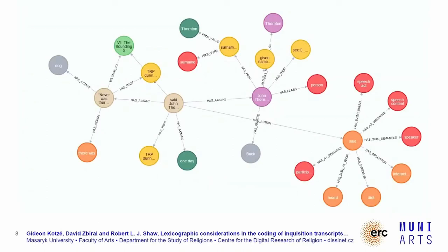This is a graph-based approach generated by the Neo4j browser, where we have a small Neo4j database imported from a document-oriented database very recently. This is for the statement 'never was there' and 'said John Thornton.' You can see there is the statement, and it has the actant 'one day,' another actant 'John Thornton' which is the person, and the person has the class 'person.' It has a property 'surname,' and 'never was there such a dog' has actant 'dog.' So it is a very nice way of visualizing the information.